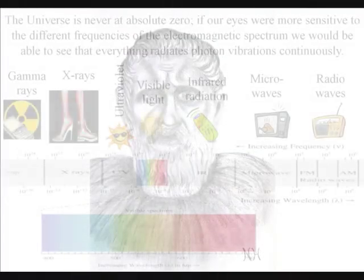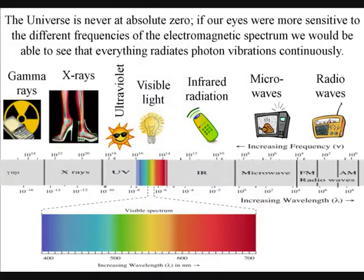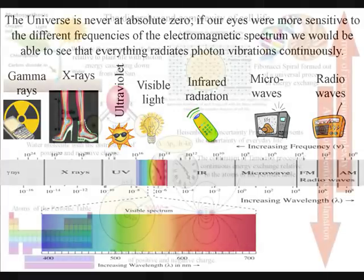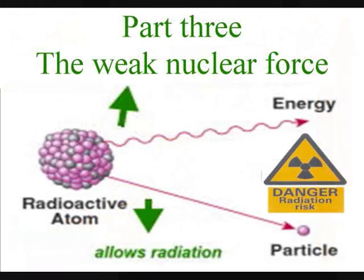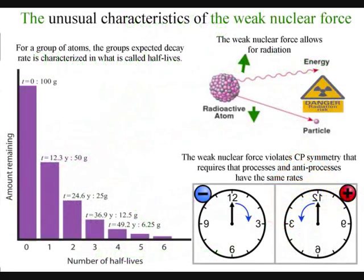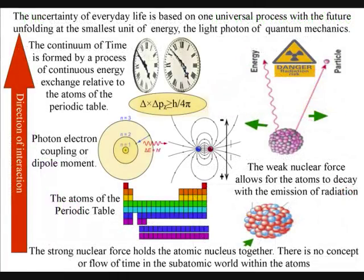In ancient Greece it was believed that the atoms were indestructible, but now we know this is not so. Atoms that decay with an unstable atomic nucleus emitting radiation could represent a problem for a theory that says the future is unfolding photon by photon relative to the atoms of the periodic table. But the weak nuclear force explains radioactive decay with some very unusual characteristics that can only really be understood as part of a logical process if what we see and feel as the continuum of time is formed by photon-electron interactions.